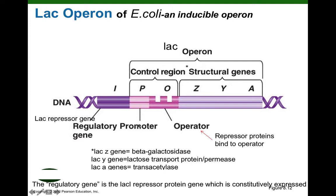This P stands for the promoter — the DNA sequence to which RNA polymerase would bind and would then start transcribing the LAC-Z, Y, and A genes into polycistronic messenger RNA. But what's new here is a new DNA sequence called the operator. The operator is a DNA sequence between the promoter and the structural genes — this is the on-off switch for the lac operon. If we could bind a protein right here on the operator, that would physically block RNA polymerase from transcribing these genes.